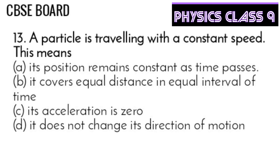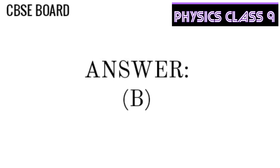Question 13: A particle is traveling with a constant speed. This means — its position remains constant as time passes; it covers equal distance in equal intervals of time; its acceleration is zero; or it does not change its direction of motion. Option B is correct.